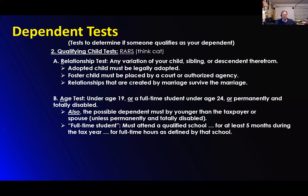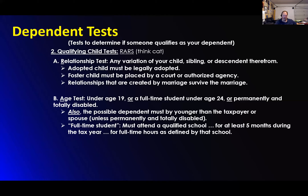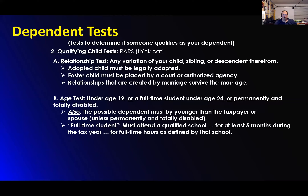A full-time student is actually really important. What is a full-time student? Five months out of the year for full credit hours — that's the important part. It has to be at least five months during the tax year for a specified number of credits as defined by the school. Five months out of the year for a certain number of credits. Each school has a set number of credits that it must qualify as.